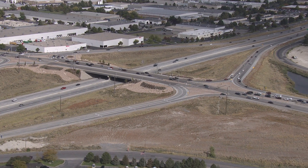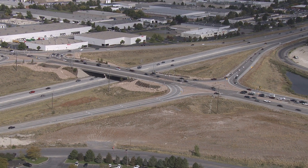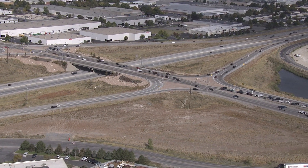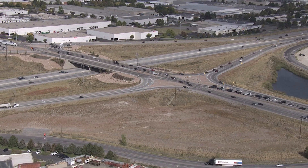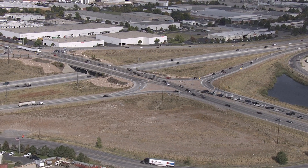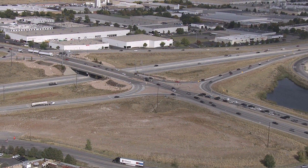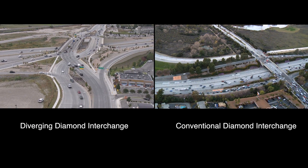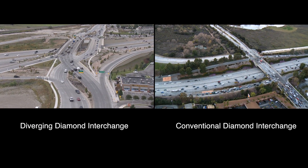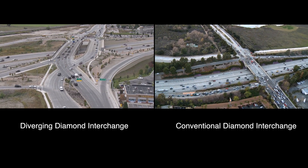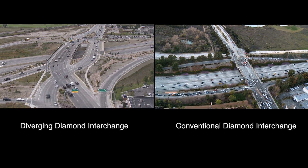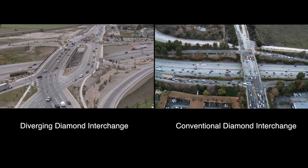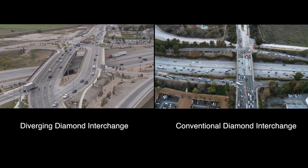The diverging diamond interchange improves performance by rerouting left turn movements so that vehicle queues wait outside the interchange instead of inside the interchange. Both signalized and unsignalized DDIs can be built. The highway capacity manual procedure for diverging diamond interchanges, or DDIs, is similar to the procedure for analyzing conventional diamond interchanges, but with a few key adjustments.